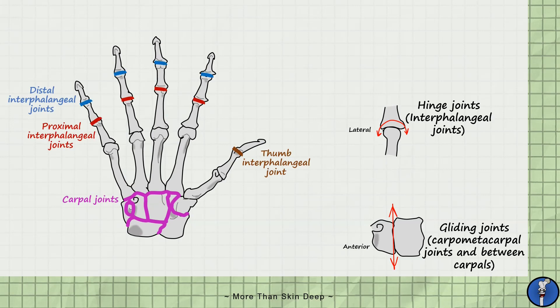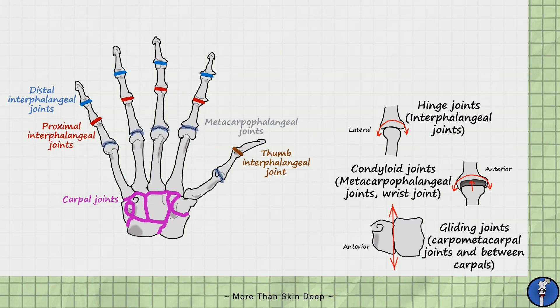Increasing in complexity we have condyloid joints. These allow flexion and extension like hinge joints but also allow limited abduction and adduction and some rotation. These are essential to allow the hand to curl up into a fist and grip objects properly. All of the metacarpophalangeal joints are condyloid in nature.